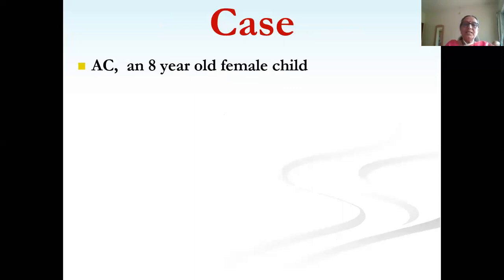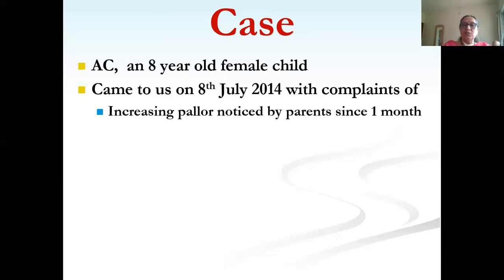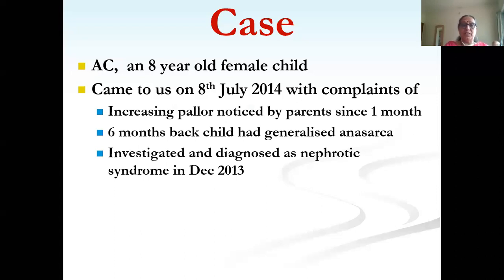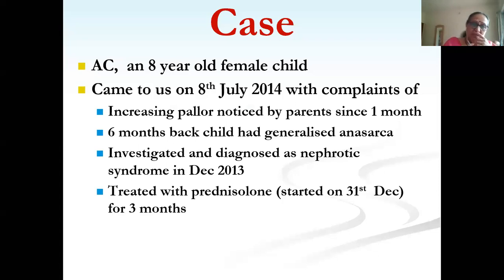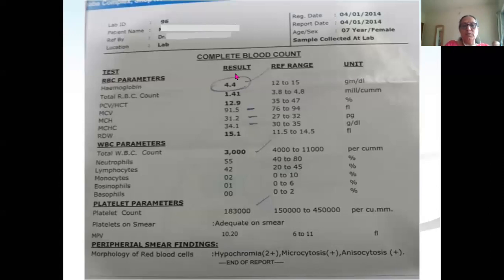Case 2: An eight-year-old girl presenting in 2014. Increasing pallor noticed since one month. Six months prior she had generalized anasarca, was diagnosed with nephrotic syndrome, and started on steroids on 31st December. On 4th January a CBC showed hemoglobin 4.4 g% — the CBC was reviewed only at that level without detailed analysis. This case illustrates an important diagnostic pitfall.